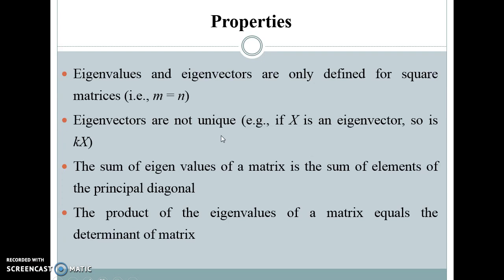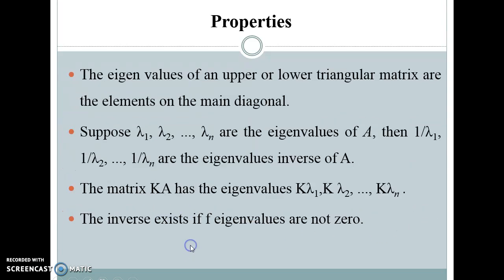First let us see the properties. Eigenvalues and eigenvectors are only defined for square matrices. The eigenvectors are not unique. The sum of the eigenvalues is equal to the sum of the elements on the principal diagonal, and the product of eigenvalues of a matrix equals the determinant of the matrix. These two properties are used to check whether the eigenvalues we find are correct.